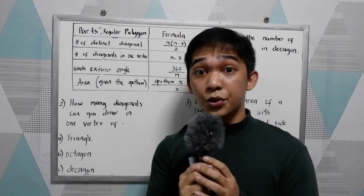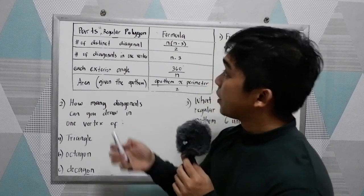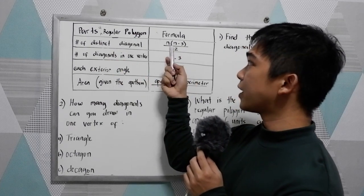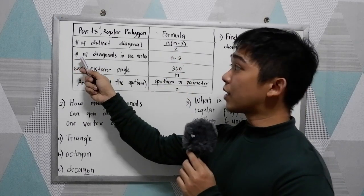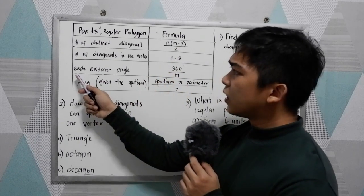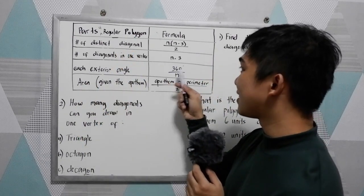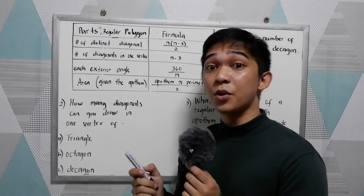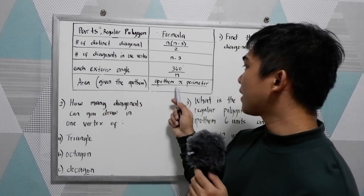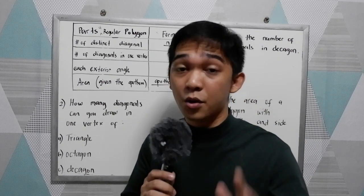You will also encounter the following formulas for a regular polygon. To get the number of distinct diagonals, the formula is n(n-3) all over 2. For the number of diagonals from one vertex, use n-3. For each exterior angle, that is 360 over n, where n is the number of sides. And if you want to get the area given the apothem, that is apothem times the perimeter all over 2. To get the perimeter, that is the measure of one side times the number of sides.